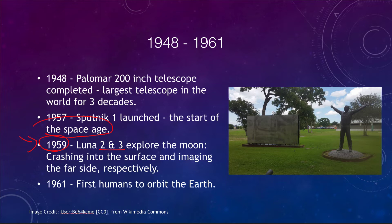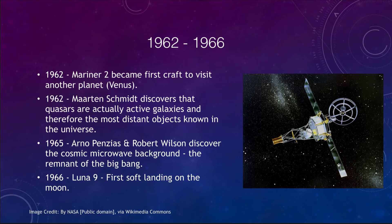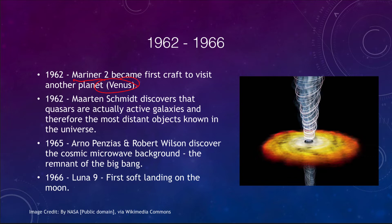In the 1960s, in 1962 — just a year after we put the first human in space — Mariner 2 became the first spacecraft to visit another planet, flying by Venus. Also in 1962, Maarten Schmidt discovered that quasars are actually active galaxies and therefore the most distant objects known. Quasars are quasi-stellar radio sources that looked like stars but were eventually found to be supermassive black holes accreting material and giving off tremendous amounts of energy, tracing out to 10 billion light years or more.